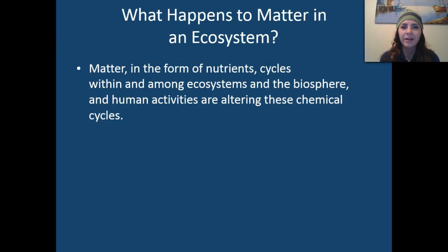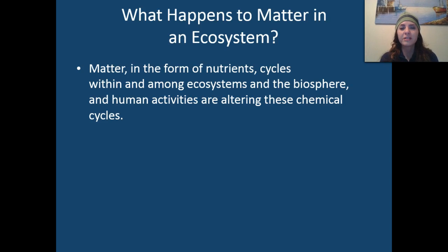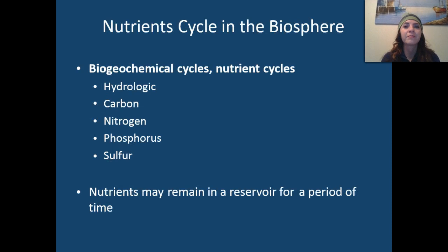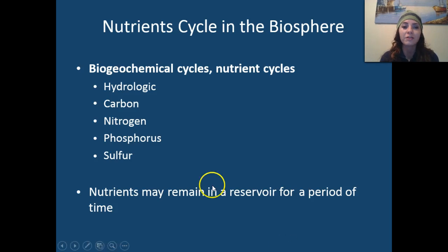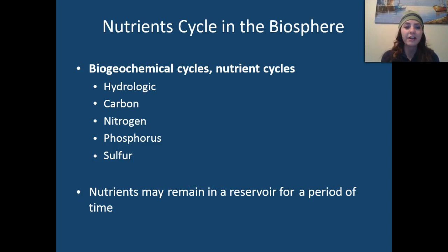What happens to matter in an ecosystem? Well, matter in the form of different types of nutrients cycles through our biosphere and within and among ecosystems. Human activities are actually altering some of these biogeochemical cycles, and not in a very positive way. We have different types of biogeochemical cycles: the hydrological or water cycle, carbon cycle, nitrogen cycle, phosphorus cycle, and the sulfur cycle.